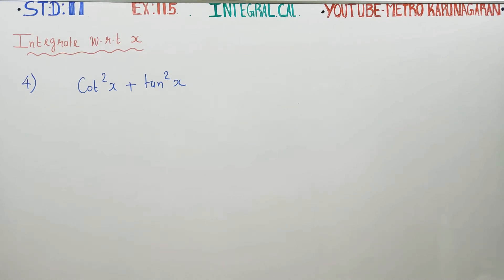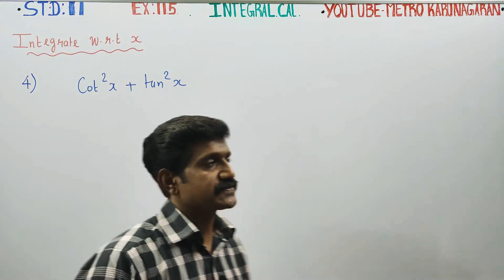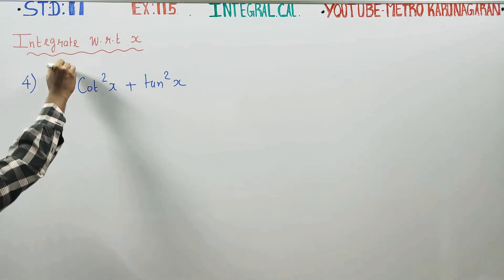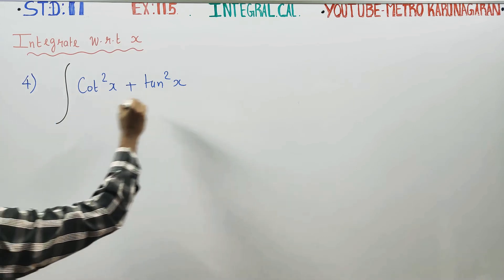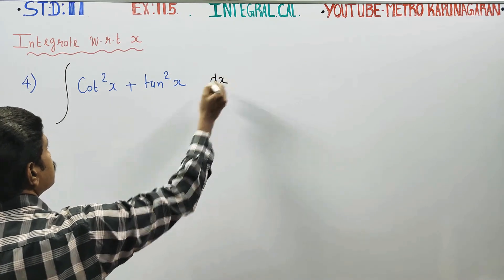Dear 11th standard students, in exercise number 11.5, integrate with respect to x: cot square x plus tan square x. You have to integrate this with respect to x.